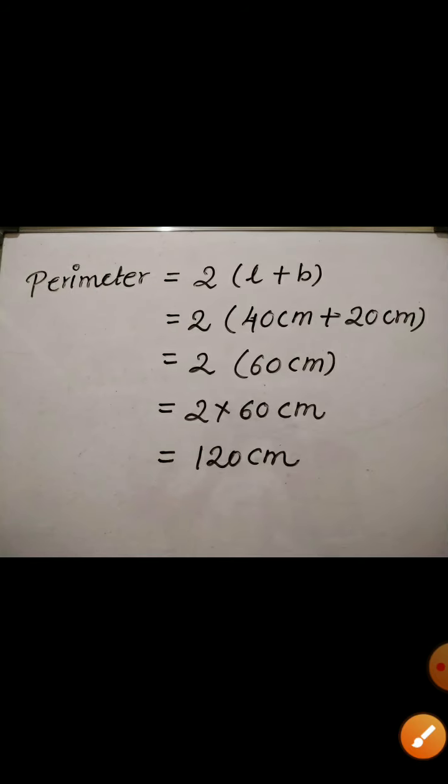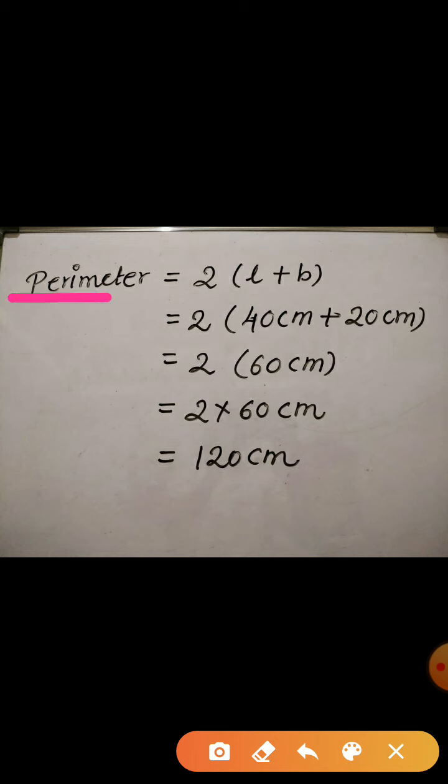So children, here you can see I have used the formula perimeter is equal to 2 times length plus breadth. Now length of book is 40 cm and breadth is 20. 40 plus 20 becomes 60. So it is 2 times 60 cm. And 2 into 60 will become 120. Hence the perimeter is 120 cm.